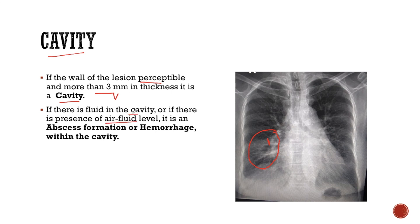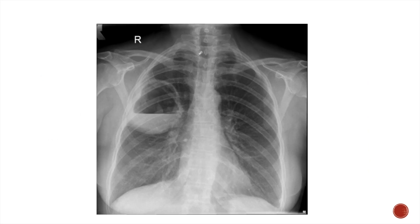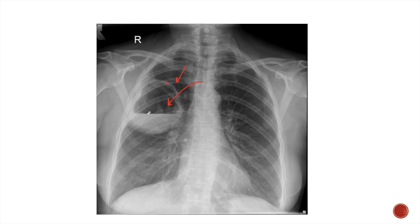If there is presence of fluid in the cavity, or if there is an air-fluid level within the cavity, it is commonly due to abscess formation or from hemorrhages within the cavity. In this X-ray, we can see a lucent lesion in the right middle zone with a perceptible wall measuring more than 3 mm in thickness. This lesion also has an air-fluid level, with the dependent area containing fluid and the non-dependent area containing air. This is a case of lung abscess.